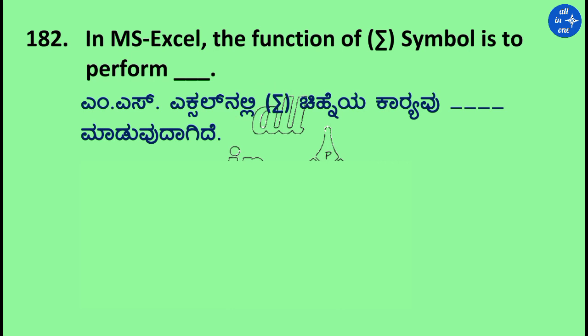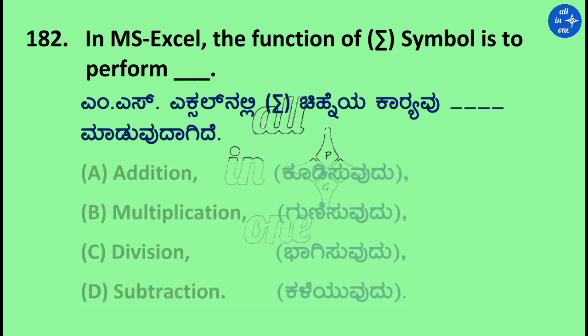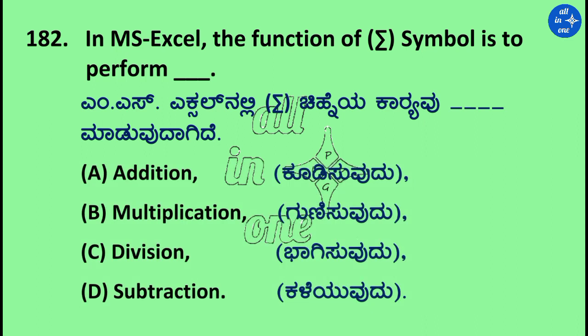Question: In MS Excel, the function of the '+' symbol is to perform dash. Options: Addition, Multiplication, Division, and Subtraction. Right answer is Addition.